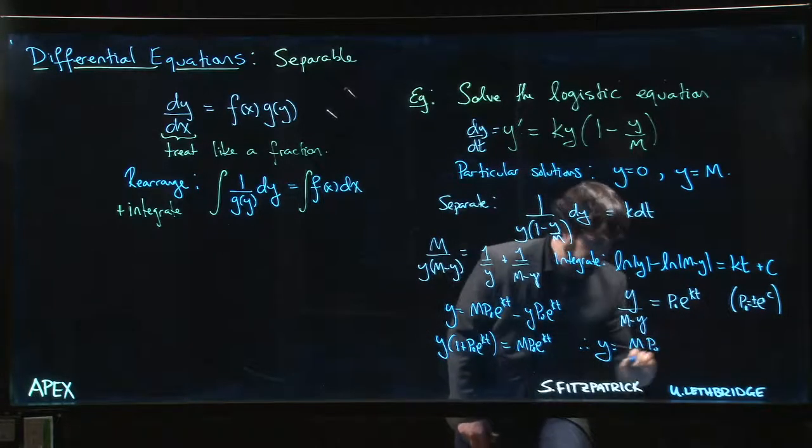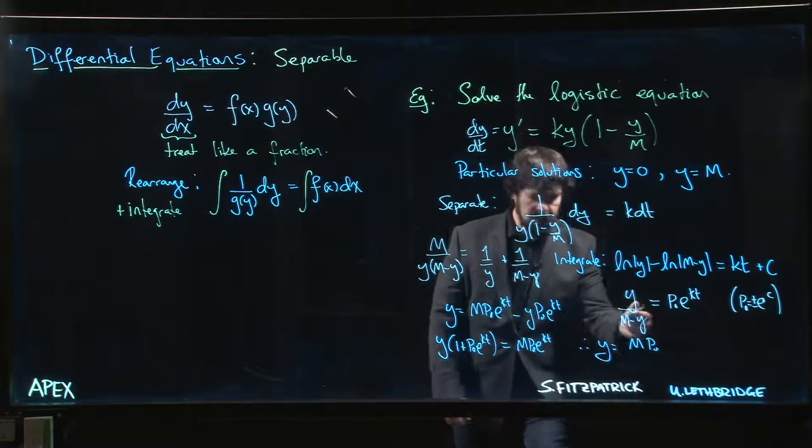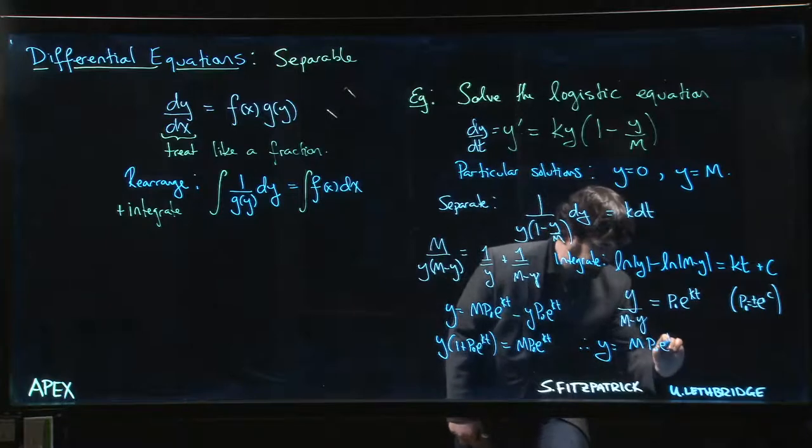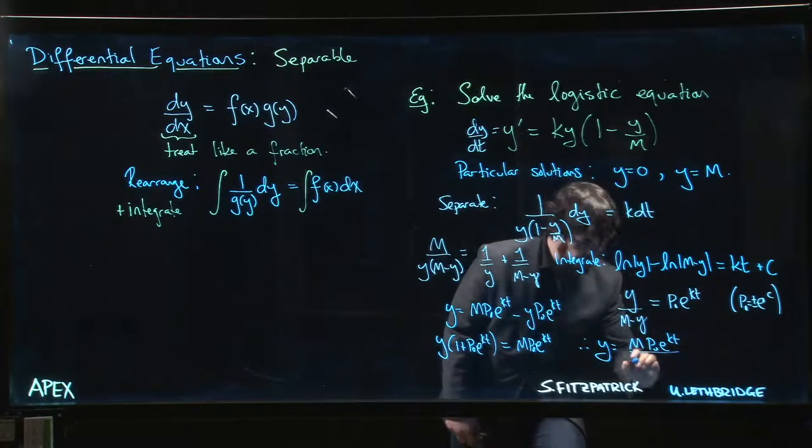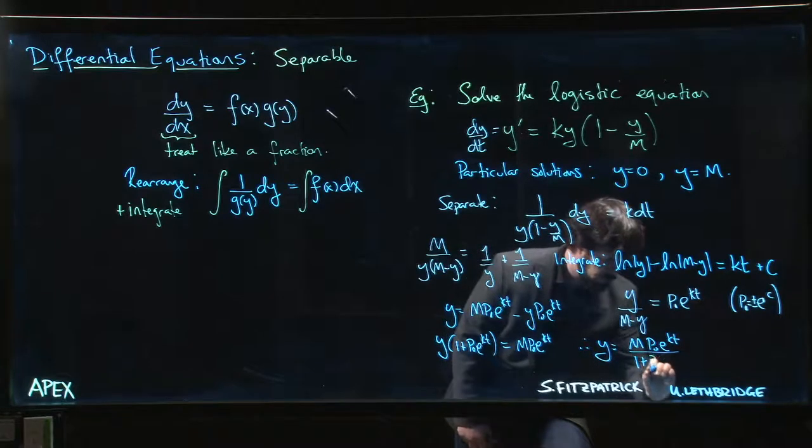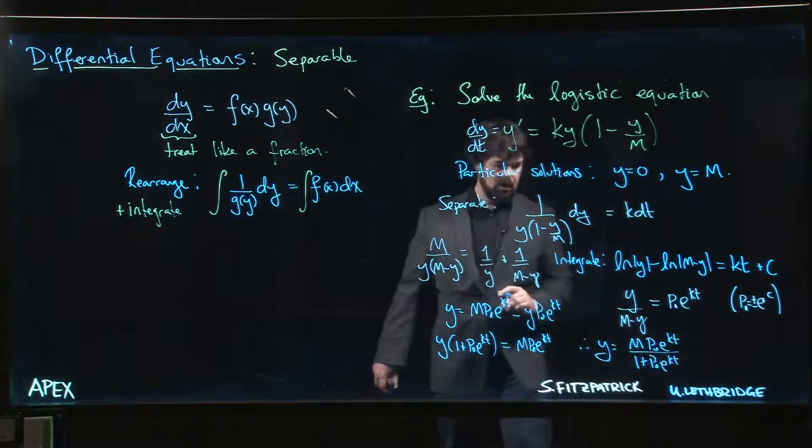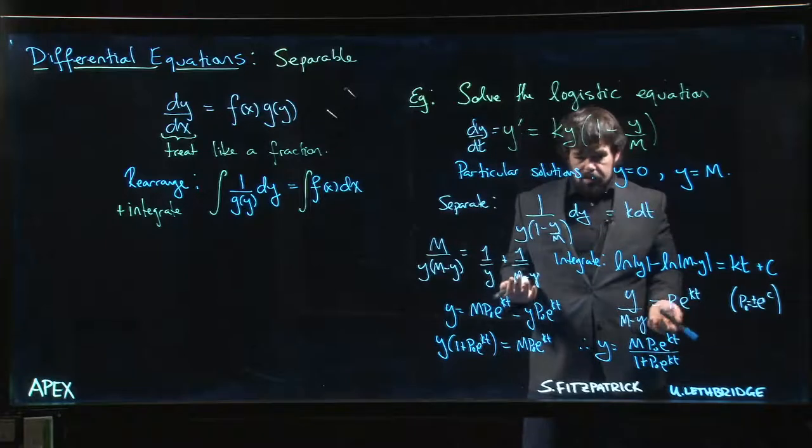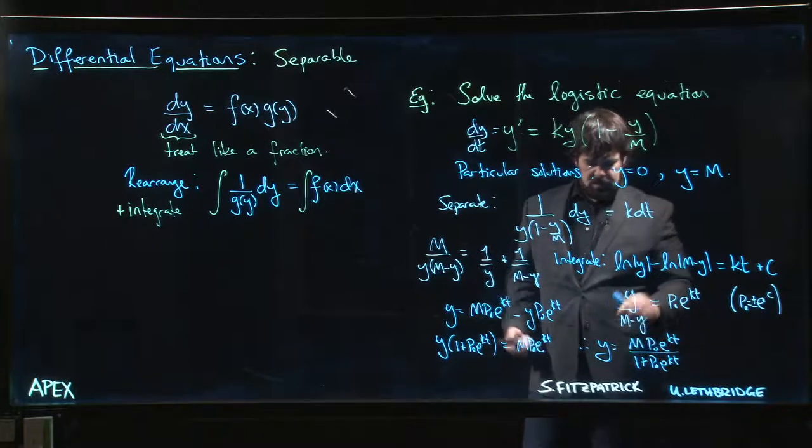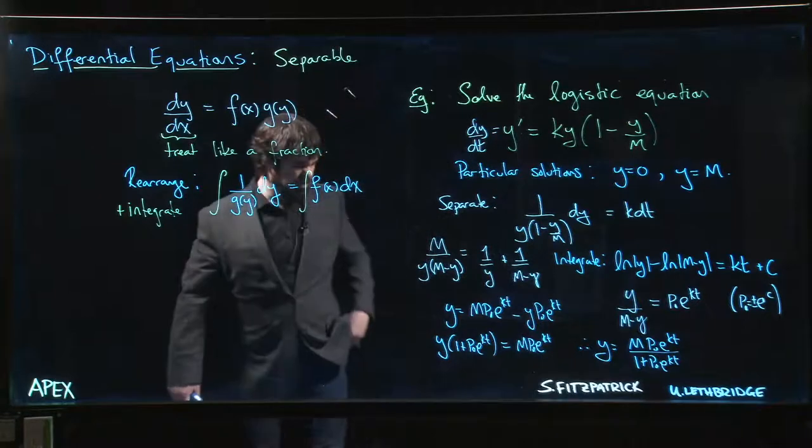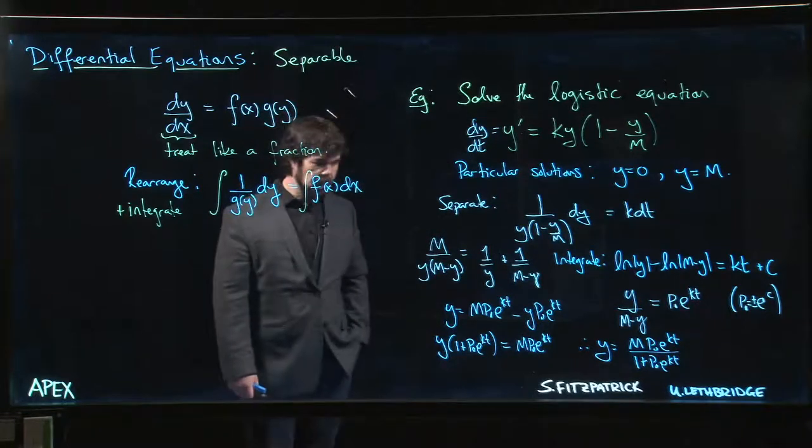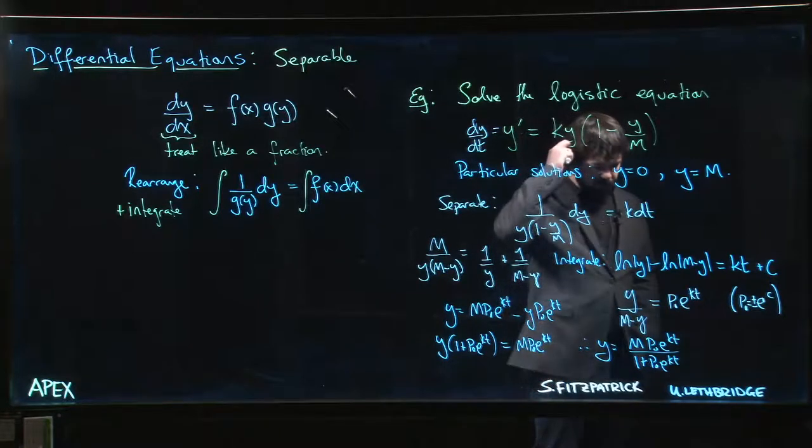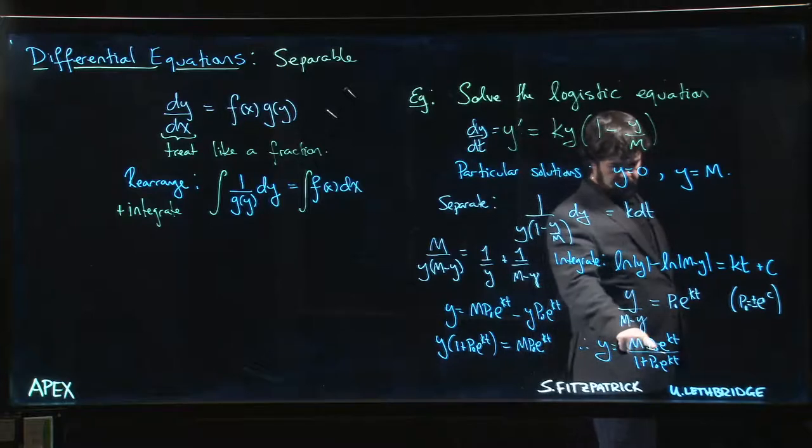So y is equal to M p_0... I use p_0 to kind of think about like initial population. I don't know if that's actually a good notation for this, but that's what I had in mind if you're wondering why I chose that letter. Um, 1 plus p_0 e^(kt). So we can write it like that. There's maybe some other further rewriting you could do if you wanted to, you know, cancel out the that population or rewrite the constant in a different way. There might be a little bit of tinkering that you can do.